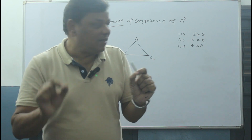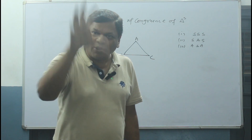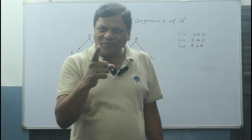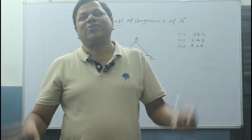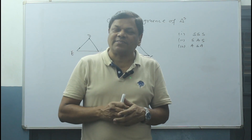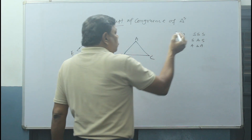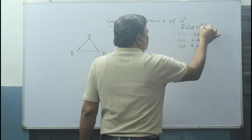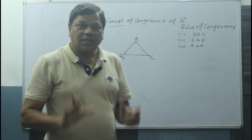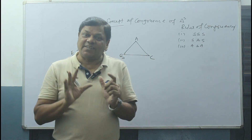Congruency means both the triangles are equal. Here I will explain what the congruency rules are. You have to understand the rules of congruency. If the rules are not clear, you cannot do the sums. So very slowly you have to understand the basic things.